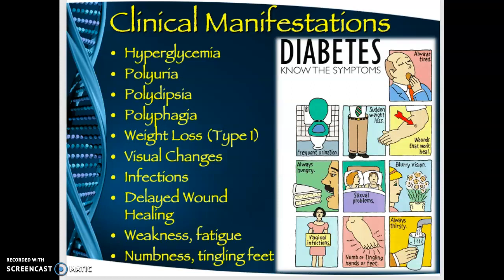Sugar levels build up, causing hyperglycemia — the first manifestation of diabetes. High blood sugar draws fluid into the blood vessels; when this fluid passes through the kidneys, the patient urinates out the extra fluid. This leads to the cardinal signs of diabetes: polyuria, polydipsia, and polyphagia.